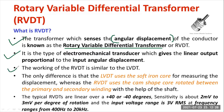The working of RVDT is 100% similar to LVDT. The difference is that in RVDT we use a cam-shaped core, whereas in LVDT we use a soft iron core — that is a major difference. Also, RVDT is mainly used for measurement of angular displacement, whereas LVDT is used for measurement of linear displacement — that is another difference.